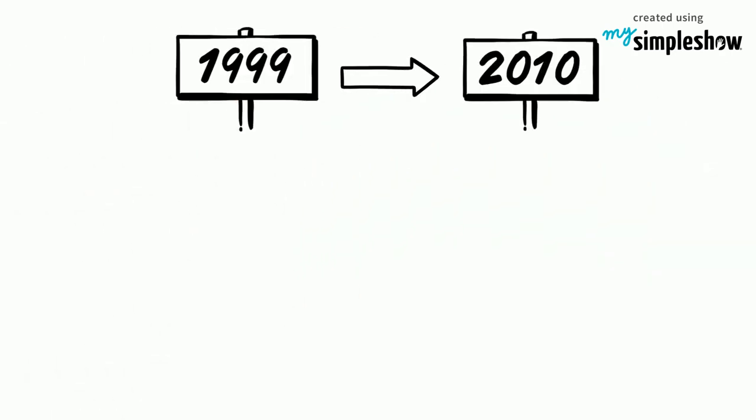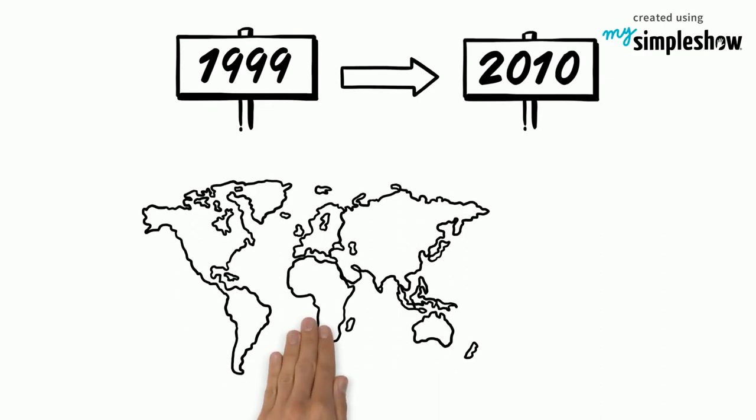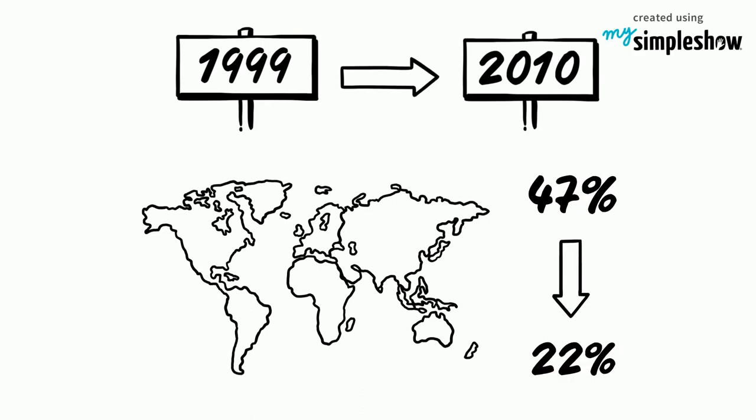From 1999 to 2010, the number of people living in developing countries has drastically decreased, going from 47% to 22%.